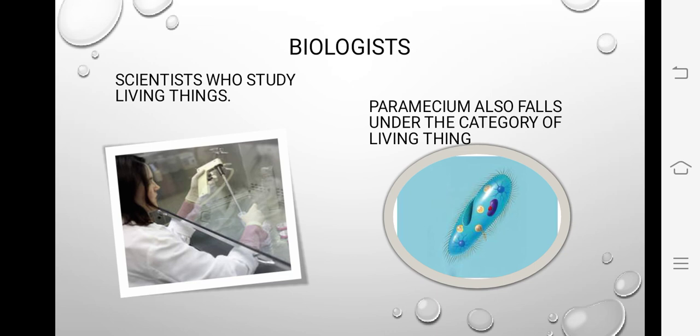Review: a biologist is a scientist who studies living things. A botanist is a scientist who only studies plants. The word 'bio' comes from 'bios' meaning life — isliye biologists study living things. Paramecium movement show karta hai — meaning it is a living thing — aur uske sides pe hair-like threads hain jo hum discuss kar chuke hain.